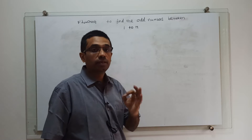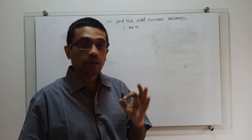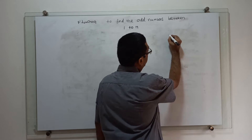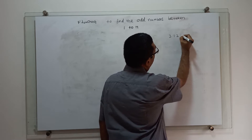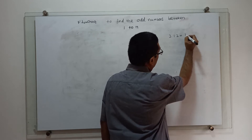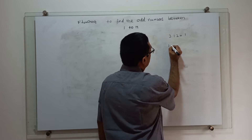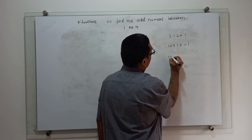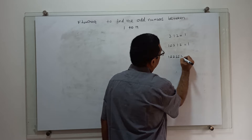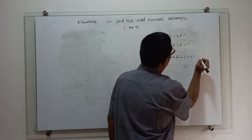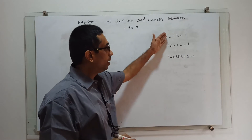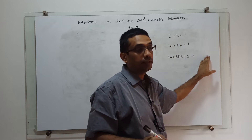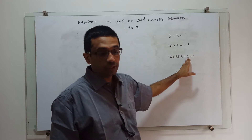How to find an odd number? We have to perform a modulo division by 2. All the odd numbers will return the value 1. For example, 3 modulo 2 is equal to 1. 153 modulo 2, the remainder is 1. 15553 modulo 2, the remainder is equal to 1. All odd numbers will return the value 1 when we perform a modulo division by 2.